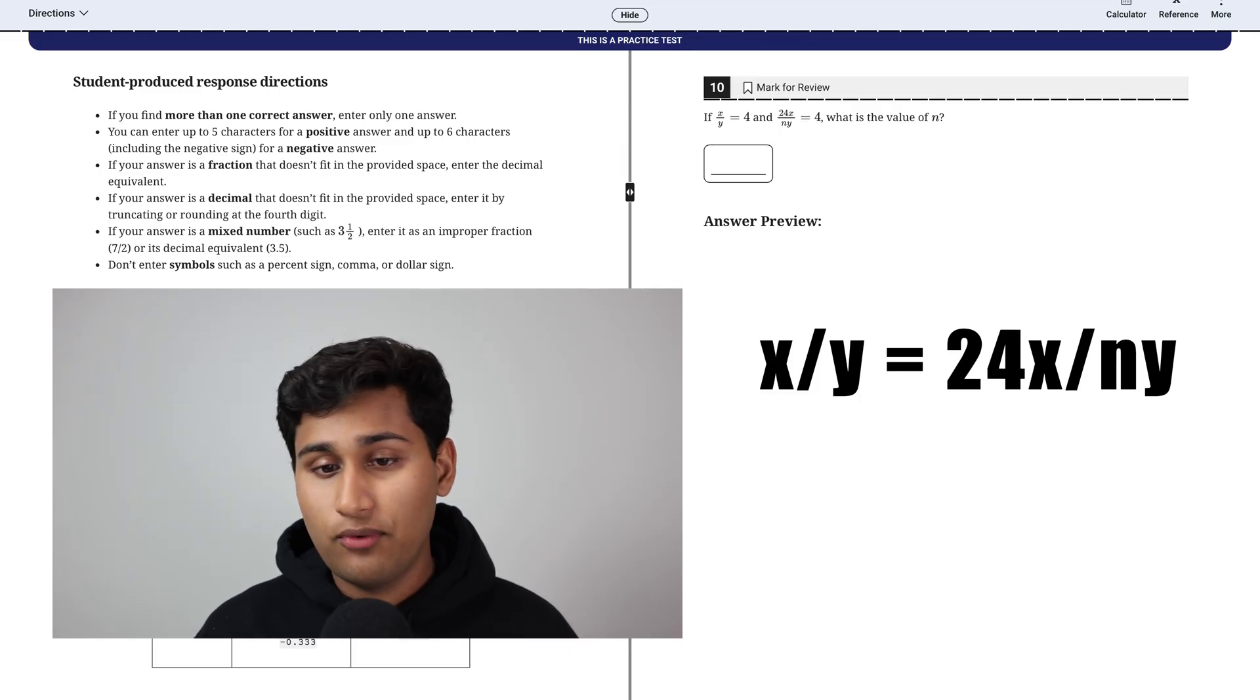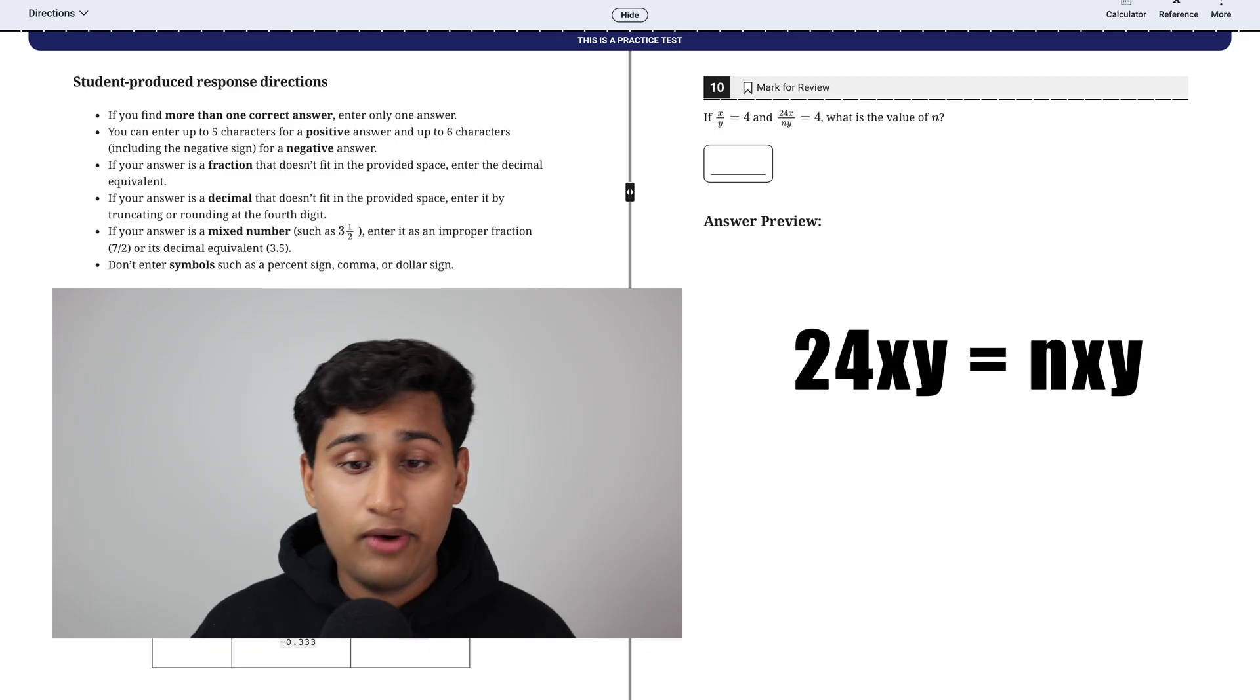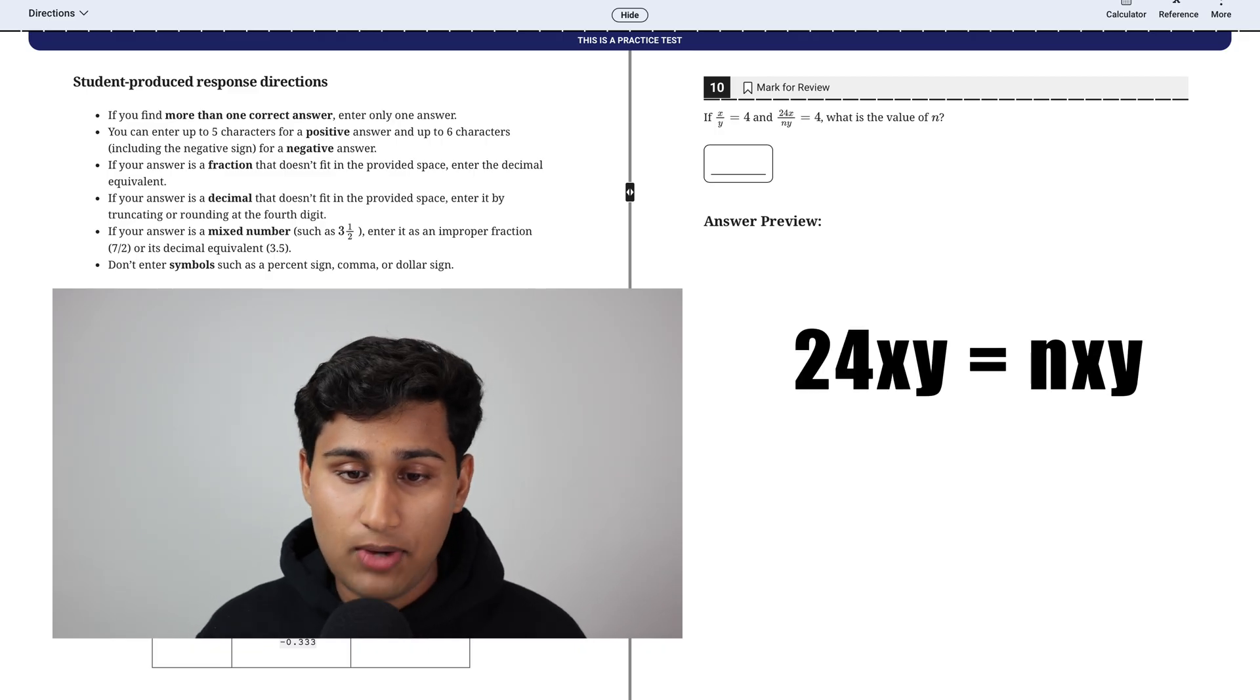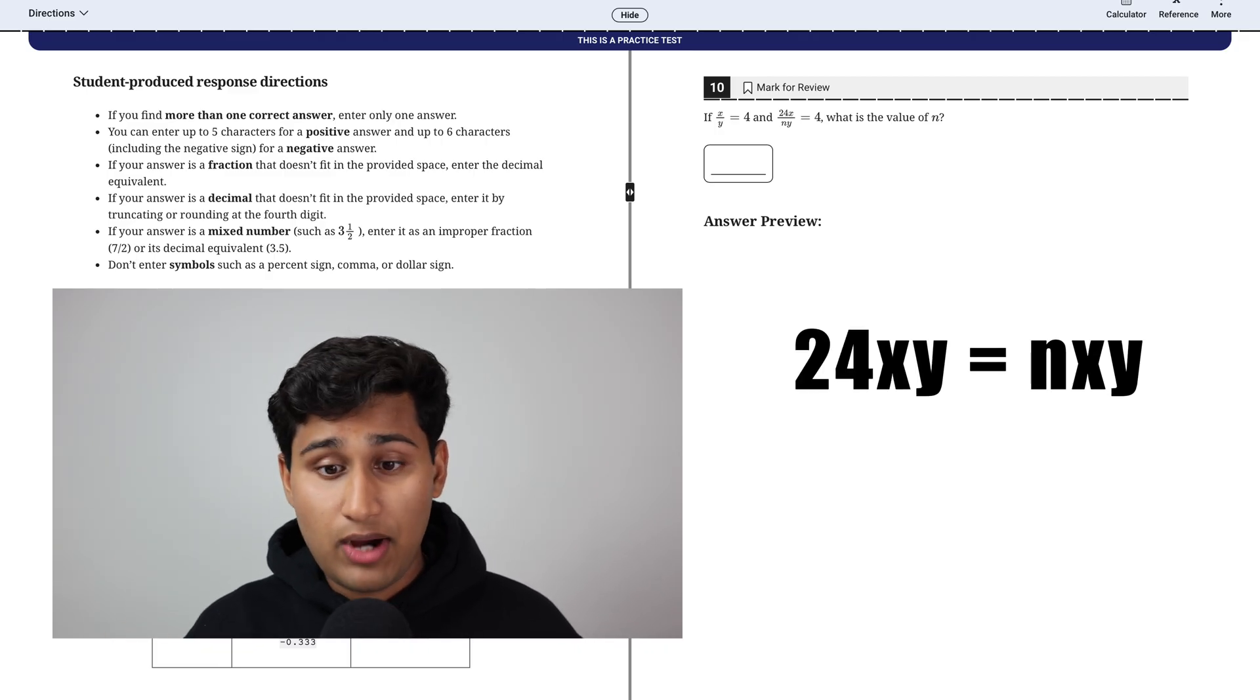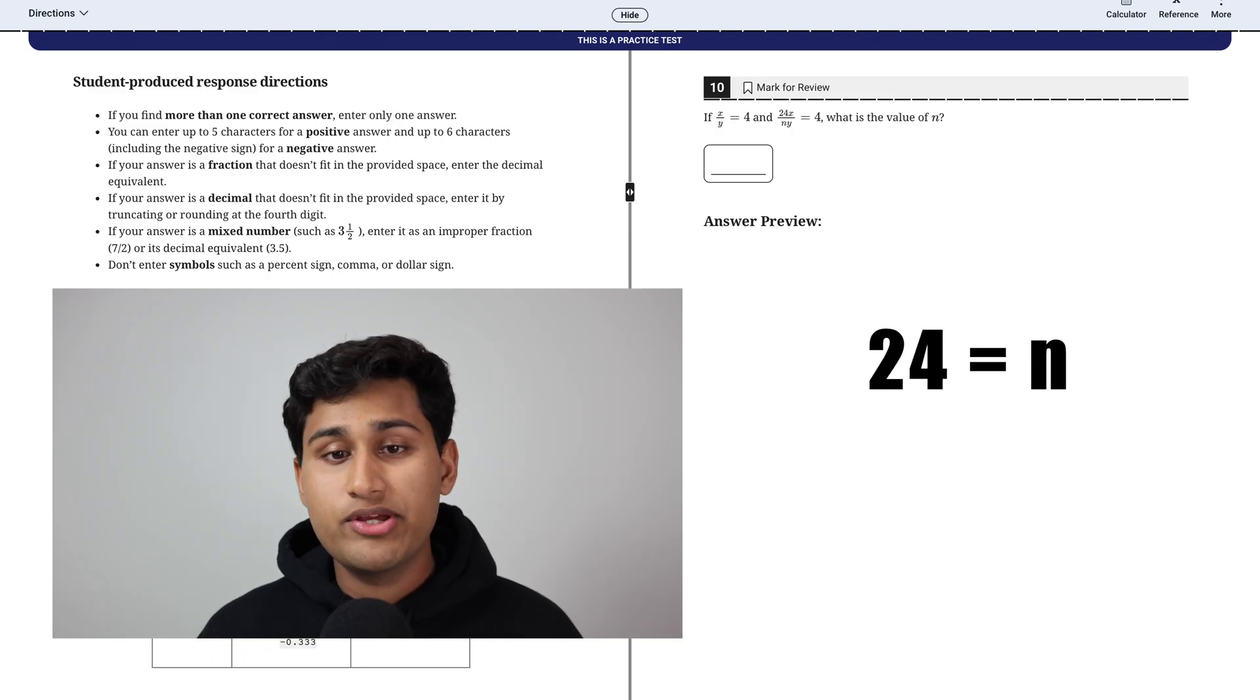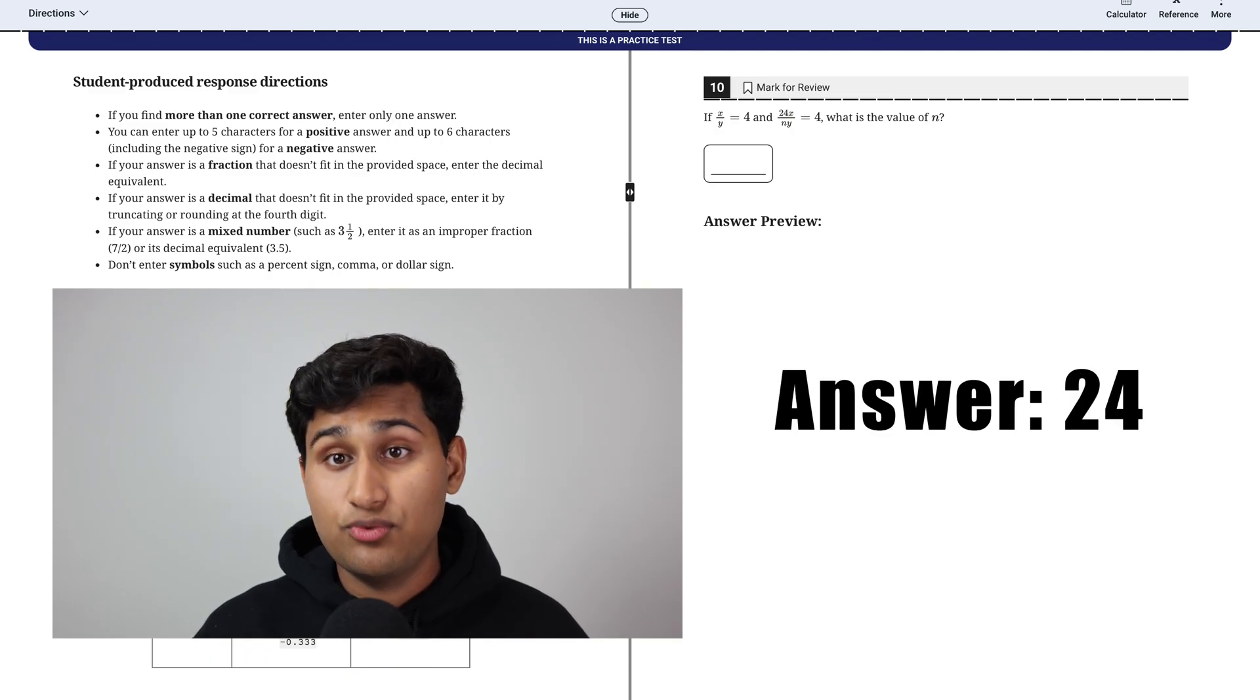So here X over Y equals 24X over NY. And if you cross multiply those, you've got 24XY equals NXY. You can just cancel out the XYs from both of those because they both have XY and you've got 24 equals N. So therefore your answer is 24.